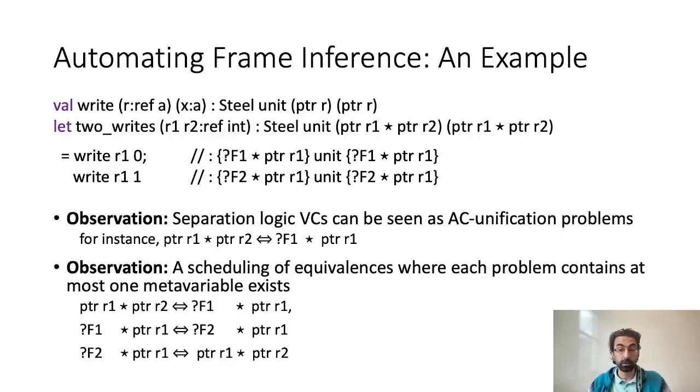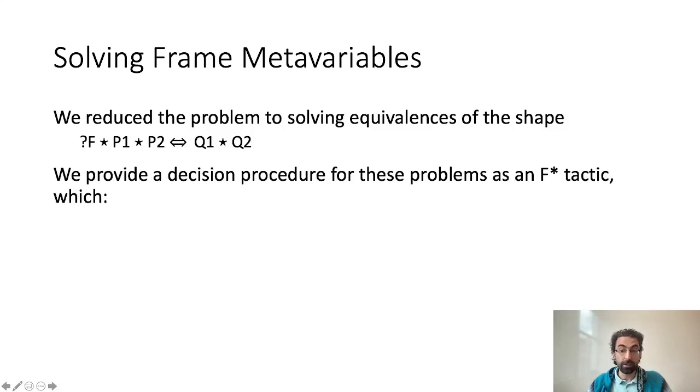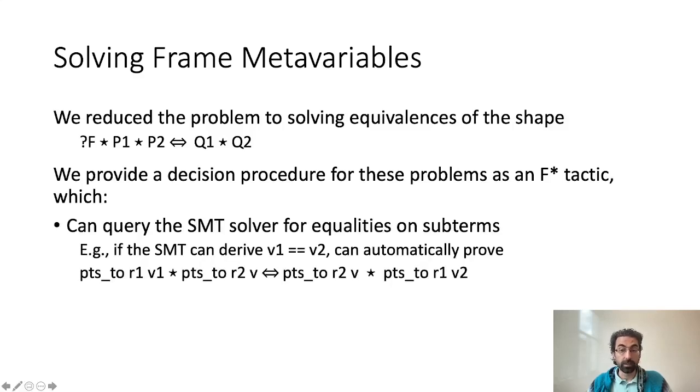Importantly, thanks to our restrictions on the application of the frame rule, the observations made on this simple example actually hold for all STEEL programs, and we can apply this methodology generically. Based on what we just observed, we therefore reduce the problem of frame inference to solving equivalences of the shape F star P1 star P2 is equivalent to Q1 star Q2. To solve this well-defined and well-structured problem, we define an AC unification decision procedure which we implement as an FSTAR tactic, ensuring its correctness with respect to FSTAR's type theory.